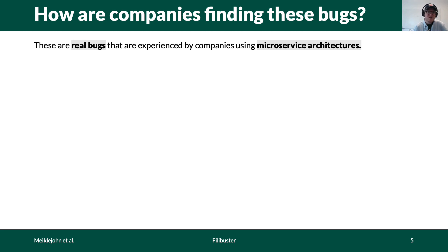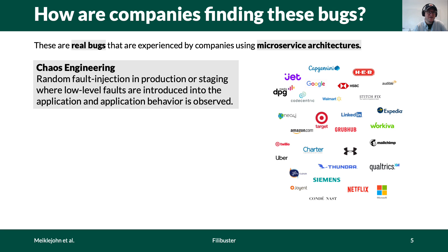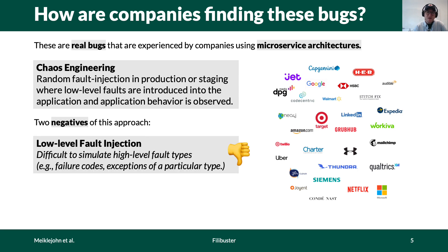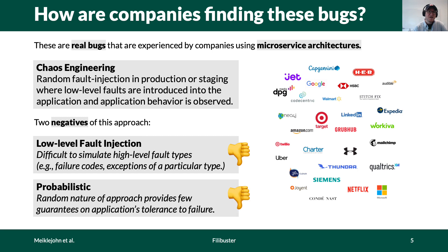So we might ask, how are companies trying to identify these issues before they cause production outages? The technique they use is called chaos engineering, which is a random low-level fault injection approach used in production or staging where failures are introduced and the application's behavior is observed. There are two negatives of this approach. First, it may be difficult for developers to map low-level faults such as terminating EC2 instances and blackholing DNS to the high-level failure types their application will observe. Second, the approach is entirely probabilistic — after 10, 20, or 1,000 experiments, you have no guarantee about what percentage of the failure space you've covered.